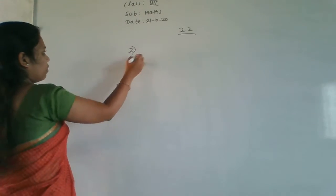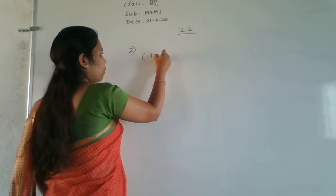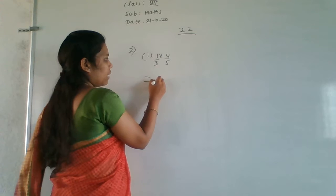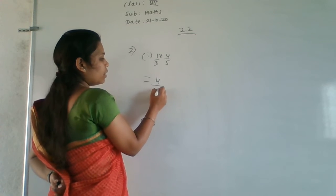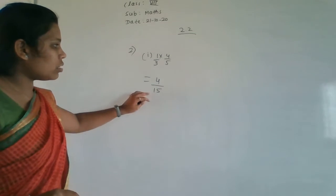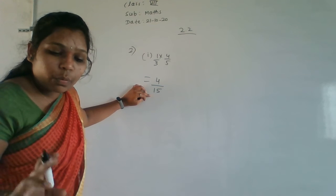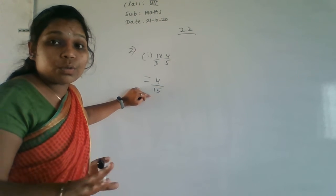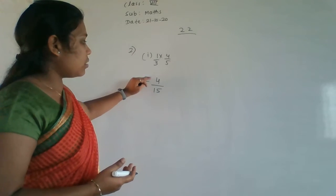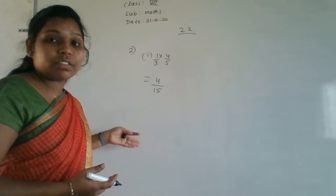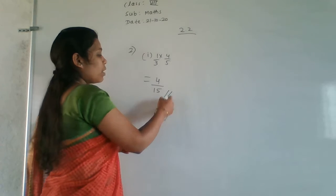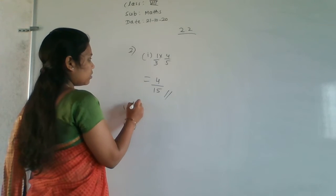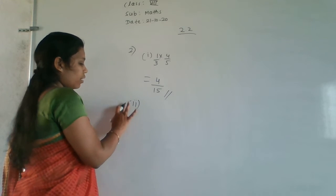First question: 1/3 × 4/5. Multiply: 1×4 = 4, 3×5 = 15. Check if 4 and 15 share a common factor — they are not in the same multiplication table, so no cancellation is possible. The simplest form is 4/15.